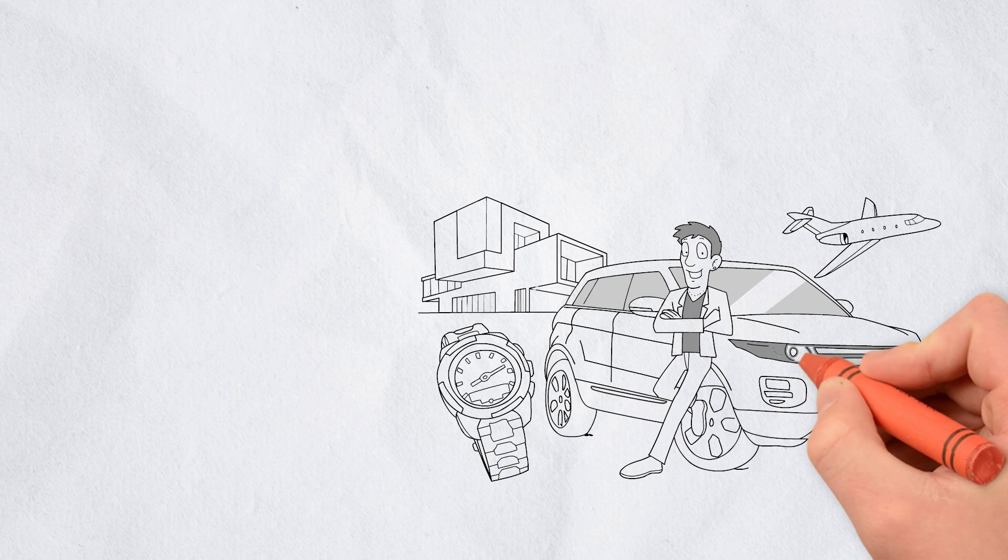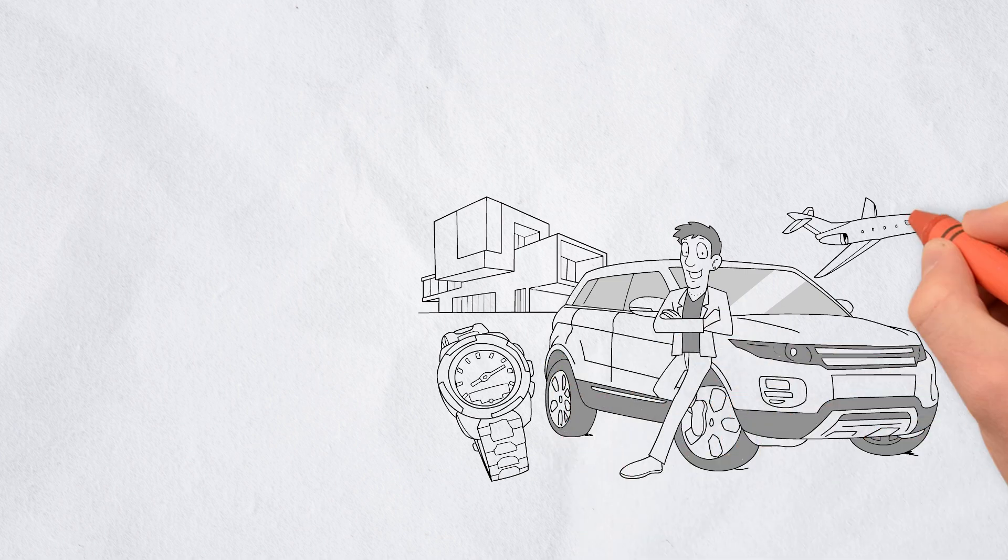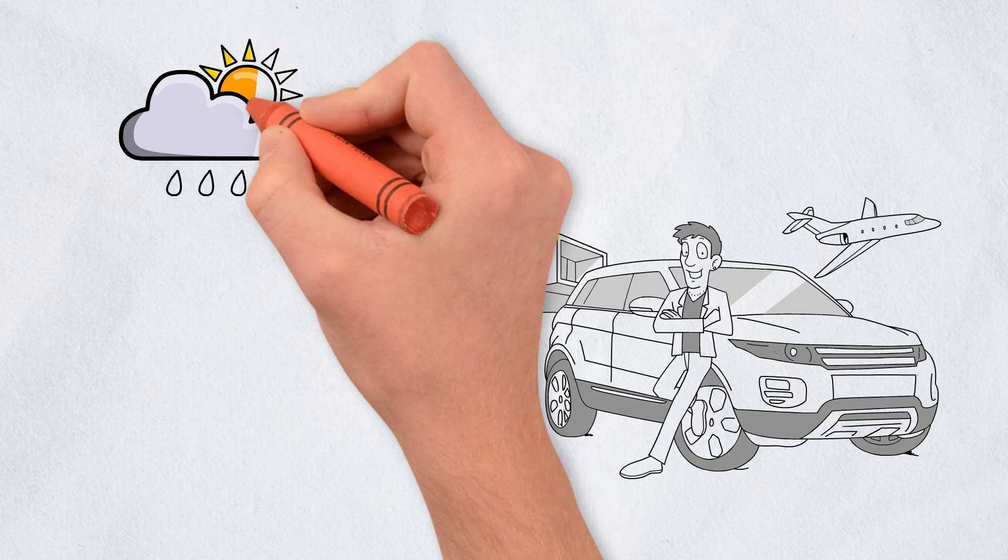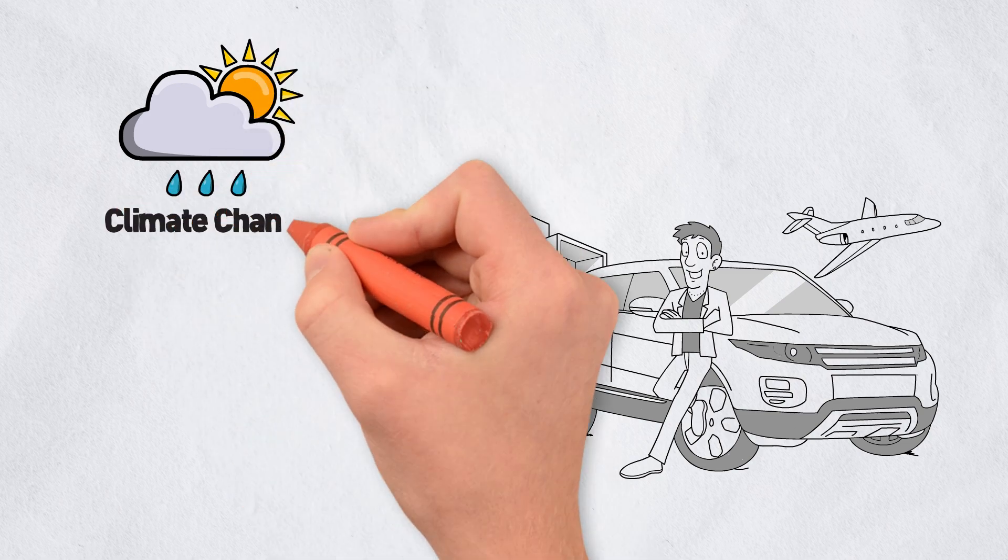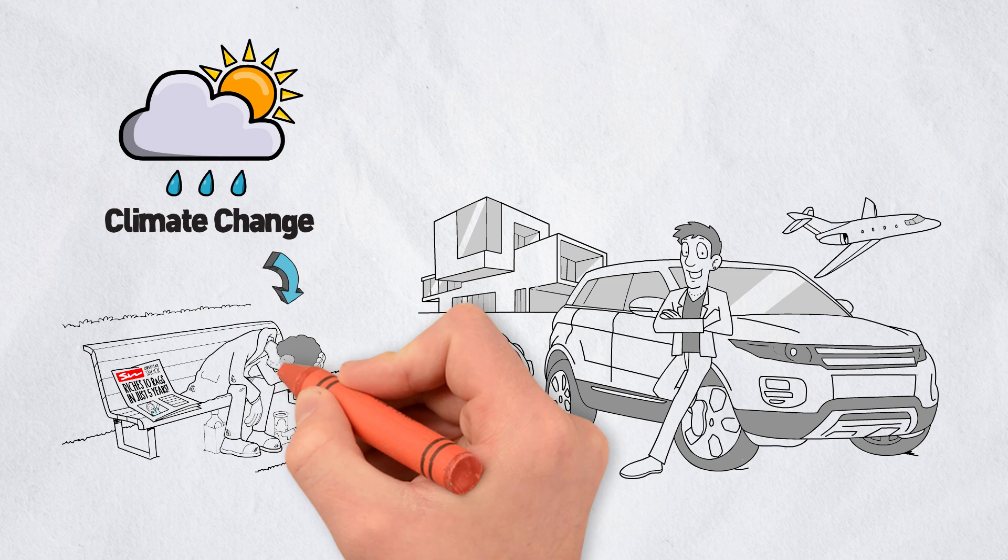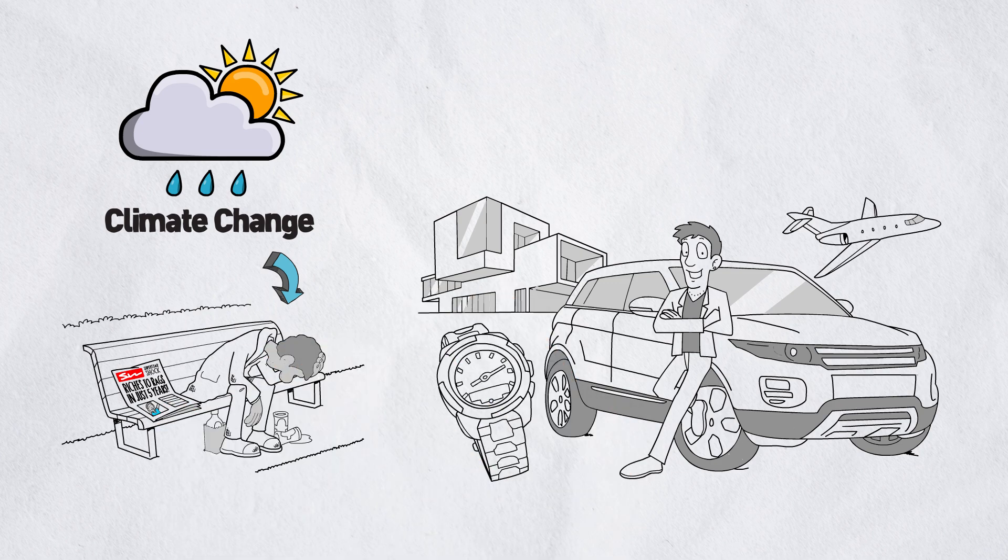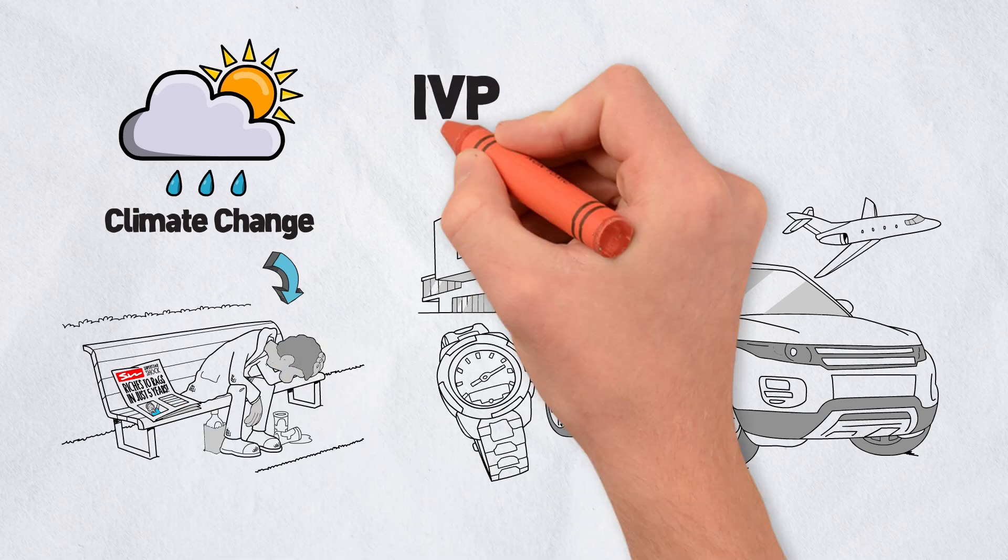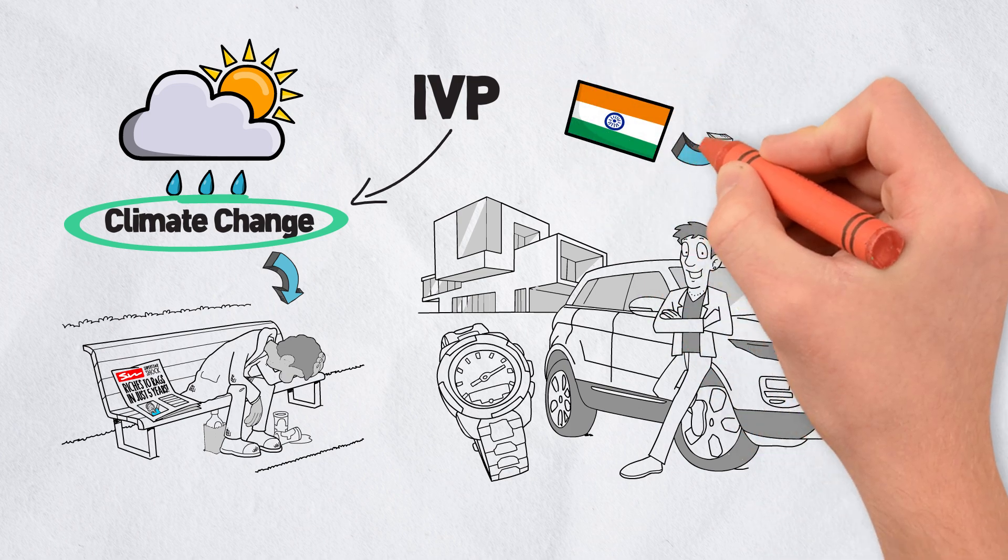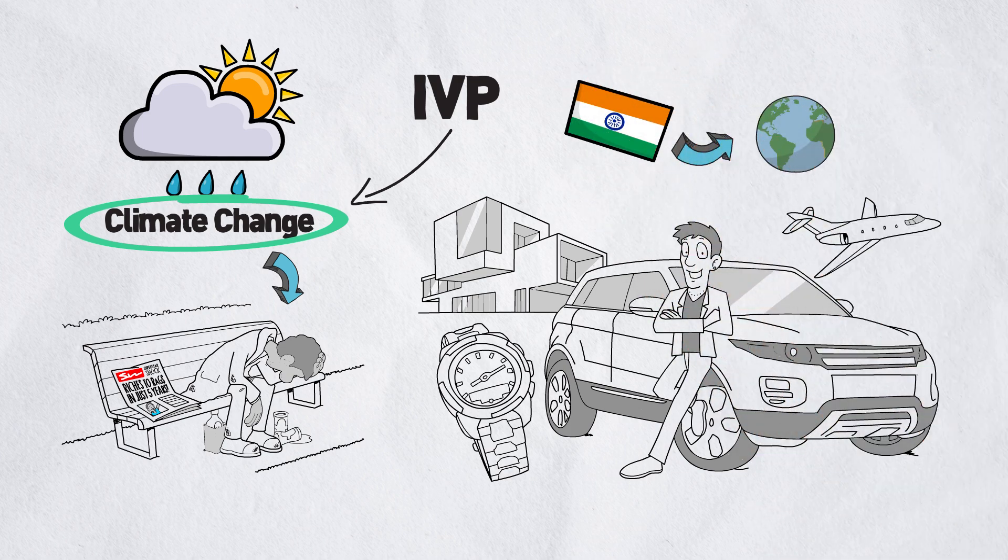Historically, the semiconductor industry has primarily served affluent populations. But the next decade requires solutions addressing global challenges like climate change, which disproportionately affect less affluent communities. IVP aims to create products that can solve these problems, starting in India and expanding globally.